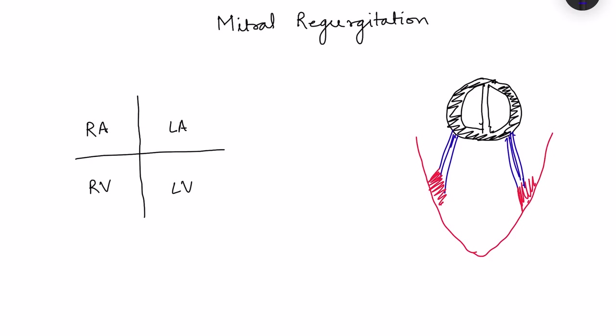Mitral regurgitation is incompetence of the mitral valve. The mitral valve is present between the left atrium and left ventricle and should close at the end of diastole, so that during systole when the left ventricle is contracting, blood moves from the left ventricle to the aorta. If this mitral valve is incompetent, it will not close properly, so blood will move into the aorta as well as back into the left atrium — that is mitral regurgitation.